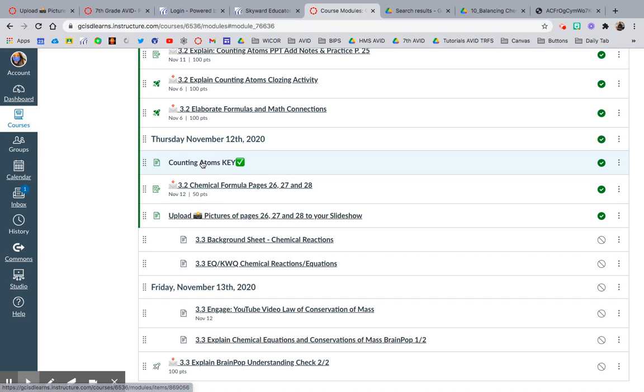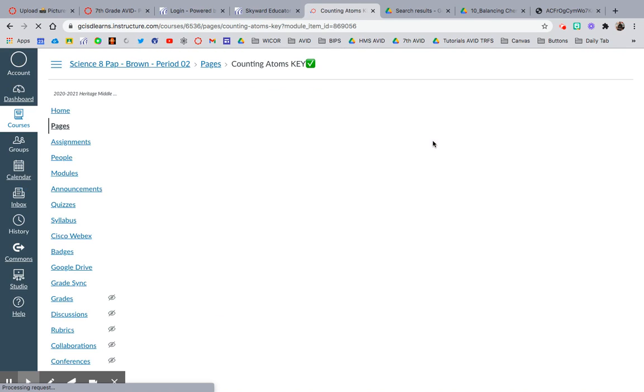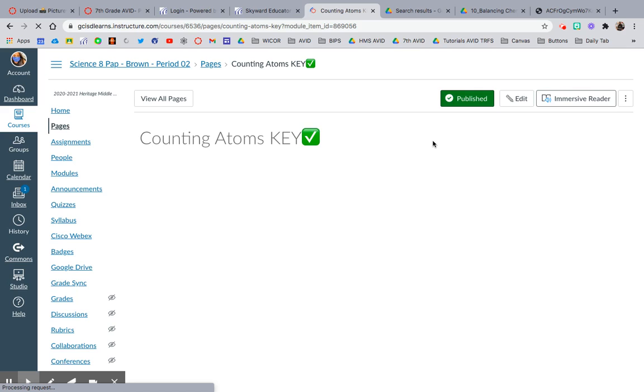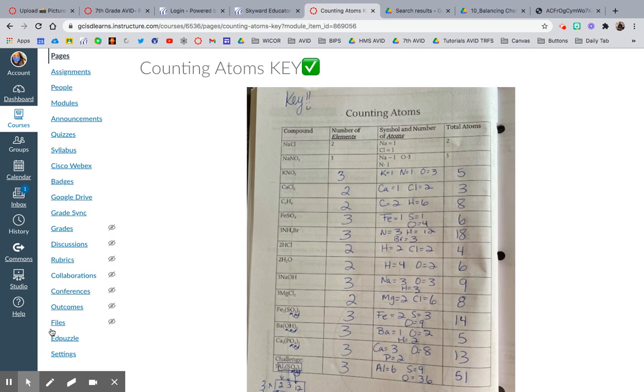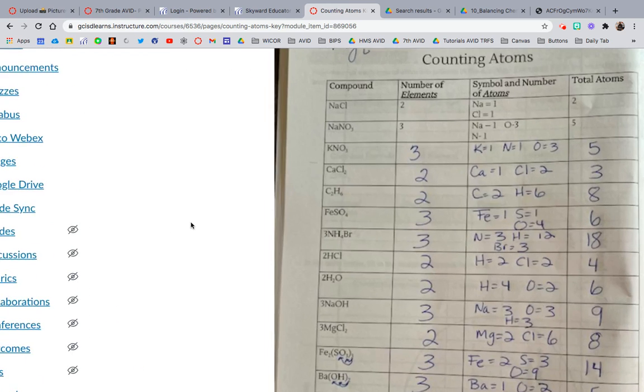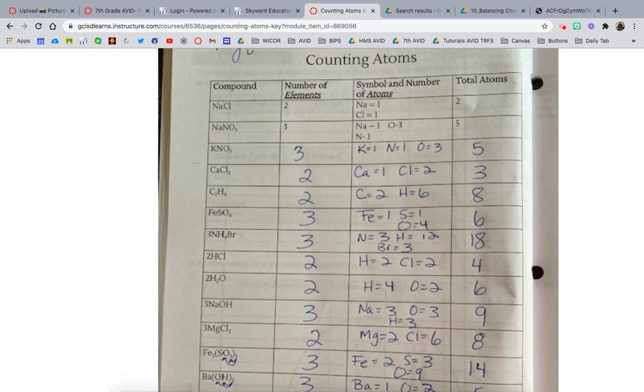So today is Thursday, November 12th, so the first thing y'all are going to click is the Counting Atoms key. And this was page 25 in your journal, and y'all had to do this yesterday in class. So I wanted to post a key, so that way you can check your answers. You want to do this prior to moving on, because if you got stuff wrong, you don't want to start today's lesson until you kind of know exactly what's going on.